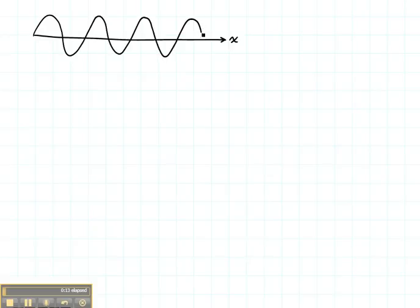Now let's talk about a wave and how it propagates. If we had a direction x and we had a sinusoidal wave, it would propagate something like this as a function of time.